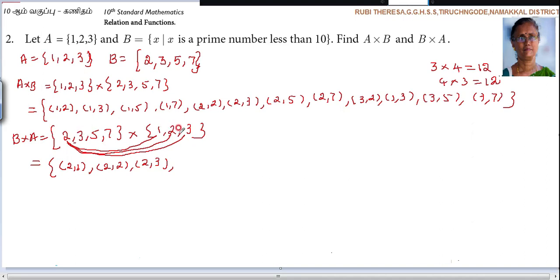The same way for 3. 3 is paired with 1, 2, 3. So (3,1), (3,2), (3,3). Next 5. (5,1), (5,2), (5,3). Along with me just you can say the answer. Then 7. (7,1), (7,2), (7,3).